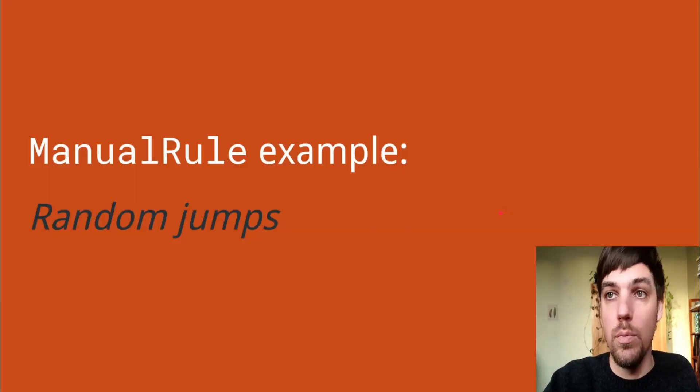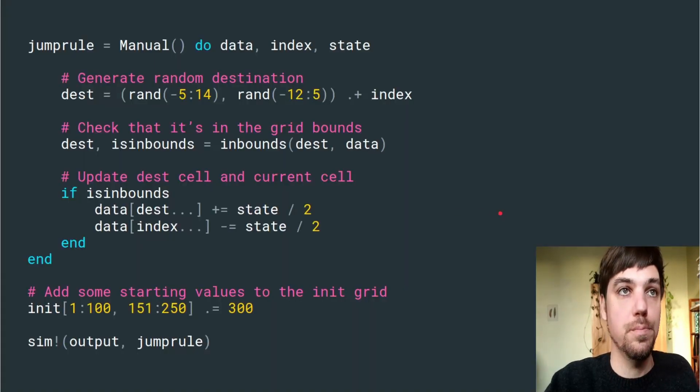As an example, we'll make a random jump rule. In this rule, we can generate a random destination with some skew so it does something interesting. We can check that the destination is inside the grid bounds, then write to that grid half of the current state and reduce the current state by half at the current cell.